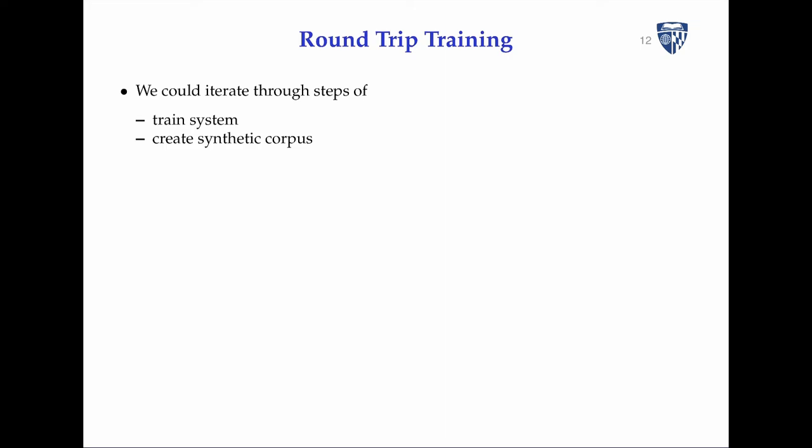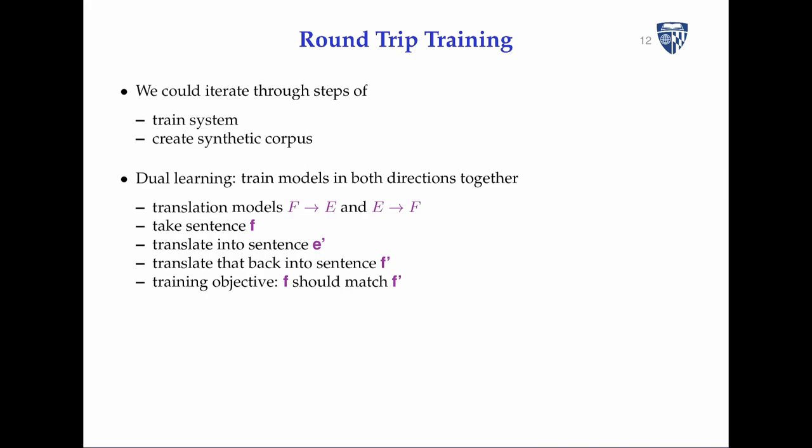One attempt at making this more principled is called round-trip training. We could iterate through steps of training a system and creating a synthetic corpus, or we can do something called dual learning. We train models in both directions simultaneously — at the same time building a translation model from language F to language E, and a model from language E to language F. Then we take a monolingual sentence in F and translate it to E.